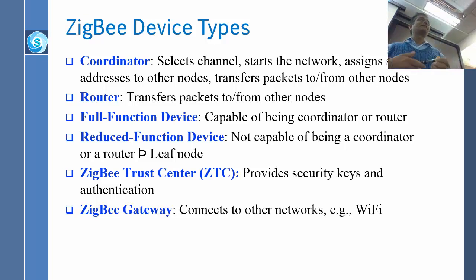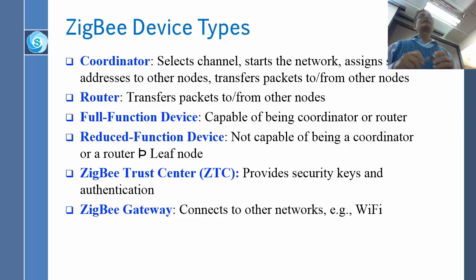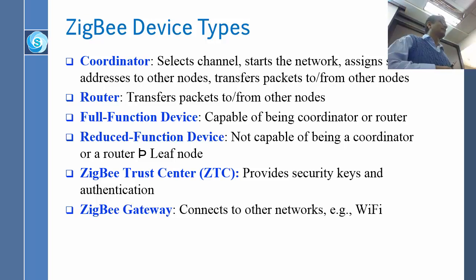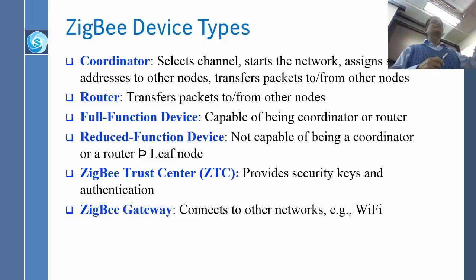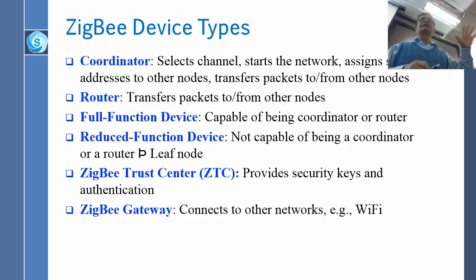Trust center is where you put your certificates and deposit your secrets. When you want to log in — actually, when we go into the network class, we go into a lot more detail of the trust center. Here, I just want to tell you that every organization might have a computer which is very well guarded, which has all the secrets that we do not want anybody else to get. When you want to get authorized, you go to that place, tell them that Raj Jain inputted this password and this name — is it valid? And that will say yes, it is valid, and then you are authorized. All these things are kept at one place. That is the trust center.